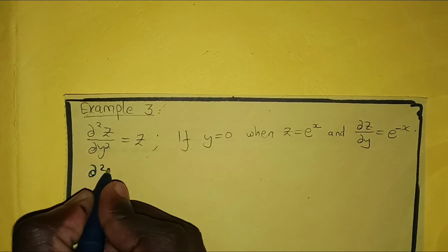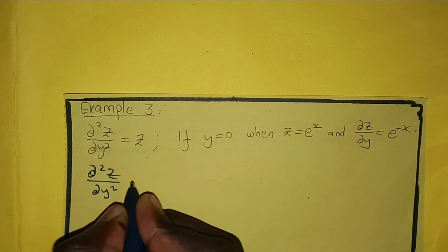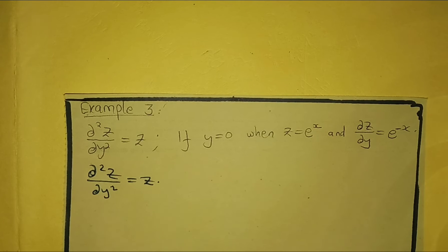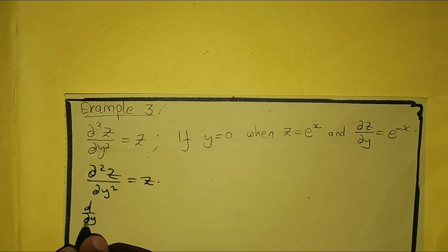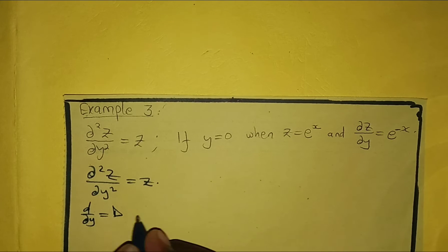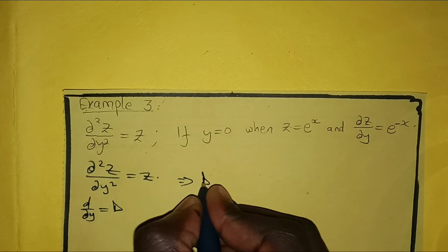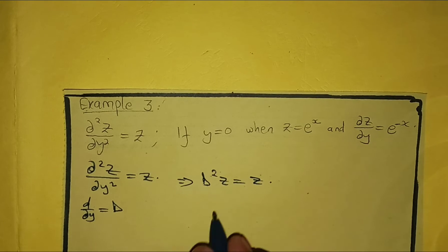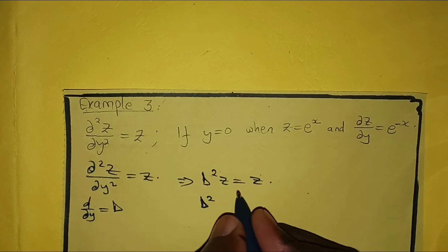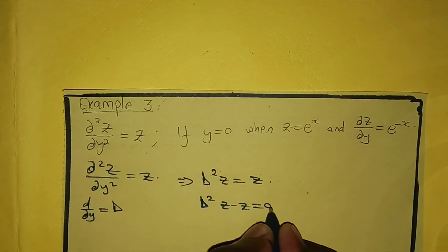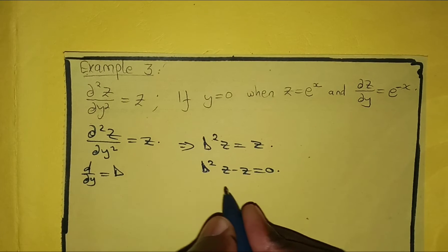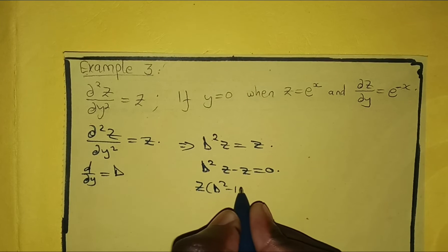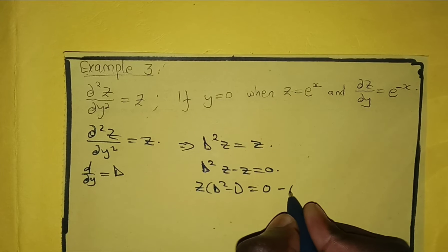So we have ∂²z/∂y² = z. Recall that we can write ∂/∂y as the operator D, so that means D²z = z. Rearranging, D²z − z = 0, and factoring out z, we get z(D² − 1) = 0. These give us our auxiliary equation.